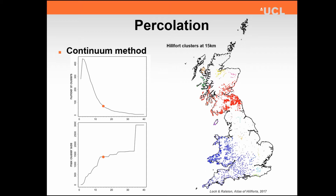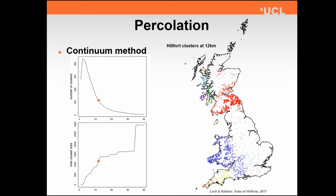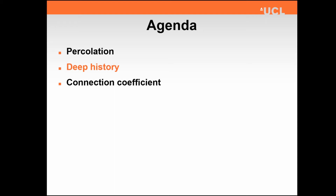Carrying on through these various transition points, at 34 kilometres we've got virtually the whole of Britain in two clusters, and the next step pretty much embraces everything apart from a few islands. When we see some of these clusters merging and forming bigger clusters, one of the things we're particularly interested in is the specific sites that are key in the formation of those — we want to pick those out and understand better something about them.